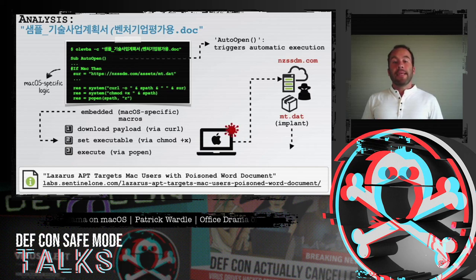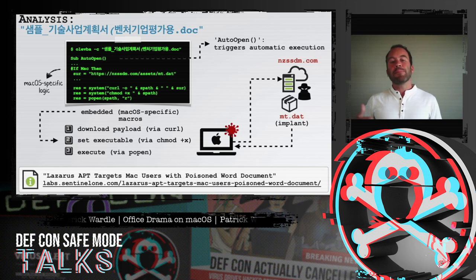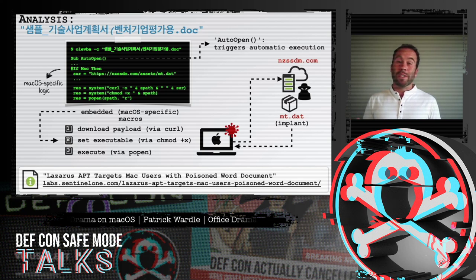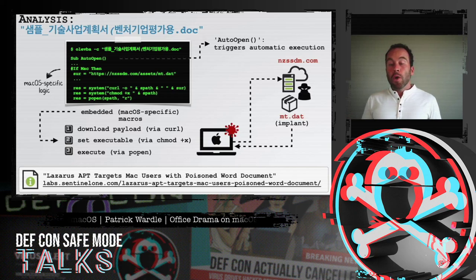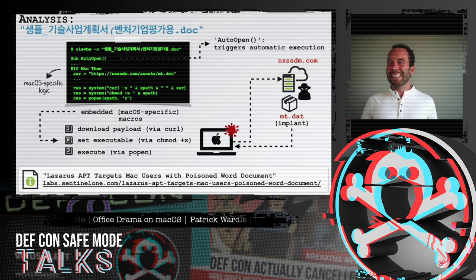Finally, if we extract the embedded macro code from the Lazarus group document, we can see it's pretty basic — it's not even encoded. It simply downloads and executes a second-stage persistent implant named mt.dat, which would give attackers persistent remote access to the system. However, this document did not have any sandbox escape code, which means if opened on a recent version of macOS, the persistence part of the attack would fail, because you can't persist code from within the context of a sandbox.